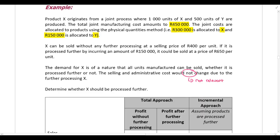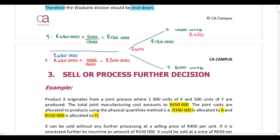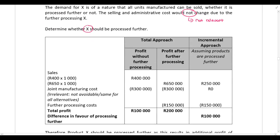The selling and admin costs aren't given in this question, but they're not relevant so we don't need them. We need to determine whether Product X should be processed further — sell at split-off or process further. We can use either the total approach or the incremental approach. With the total approach, we perform two separate calculations: what happens if we do not process further versus what happens if we sell after further processing.